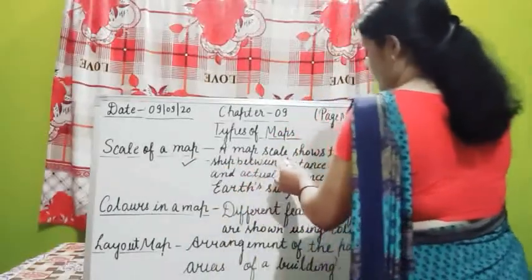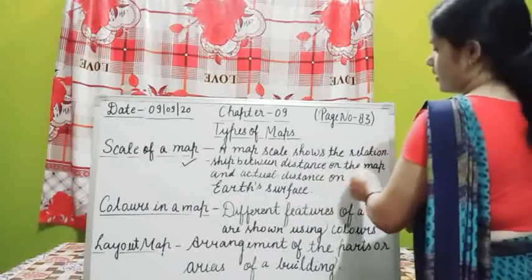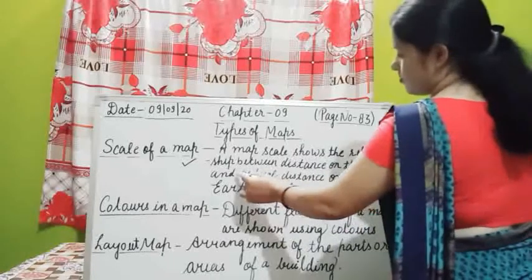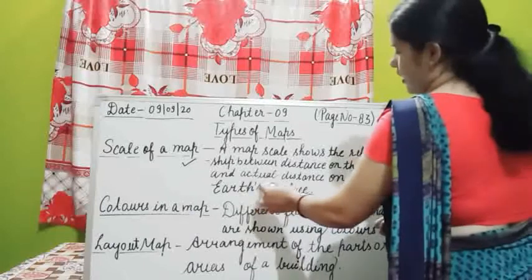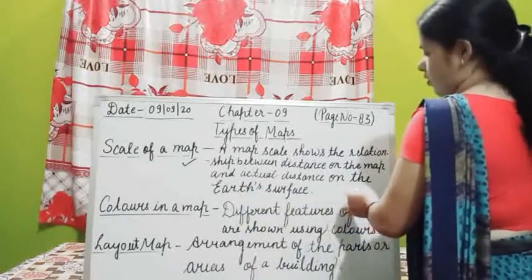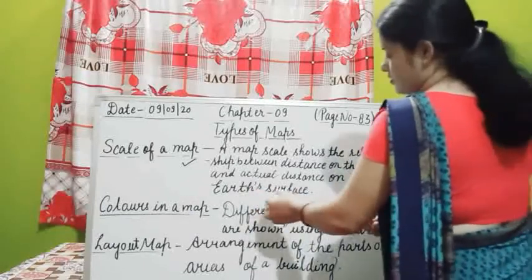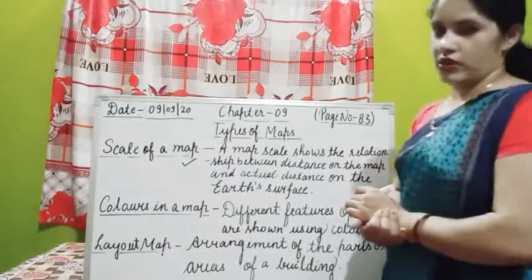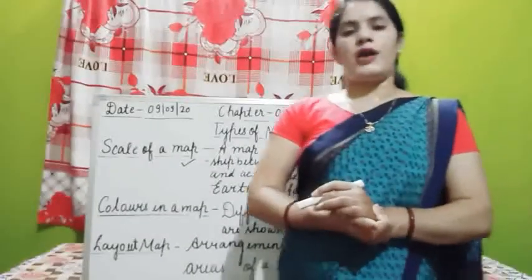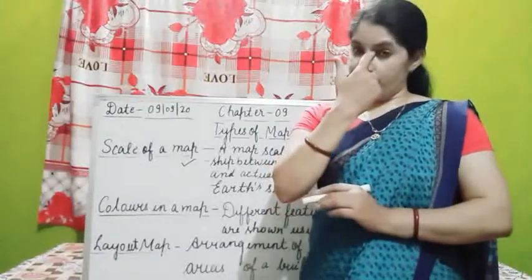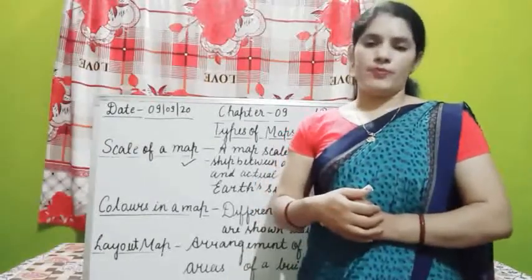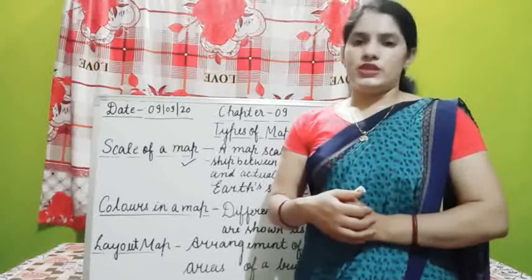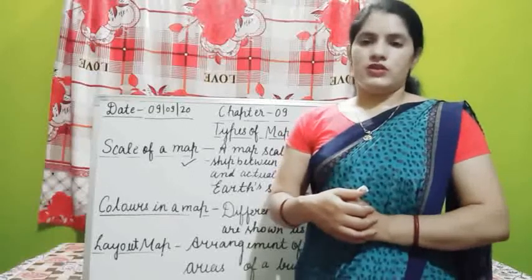A map scale shows the relationship between distance on the map and actual distance on the earth's surface. What is a map scale? A map scale shows the relationship between distance shown on the map and in reality on the earth.